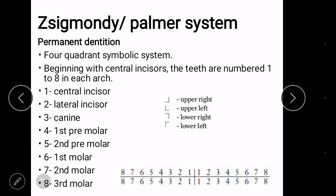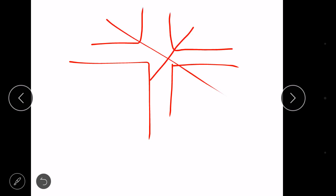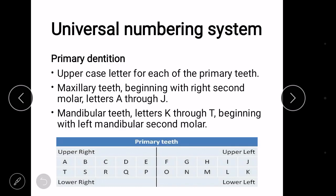Now, Zsigmondy symbol is so easy to understand and so easy to draw, yet it is not in day-to-day practice because these symbols are not compatible with our keyboards. We have no such key which can make these kind of symbols. Hence, these are not in use and we require another system, which is universal numbering system.